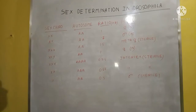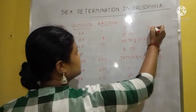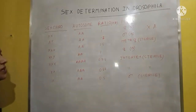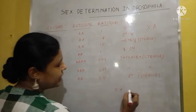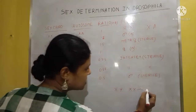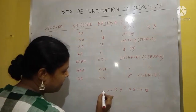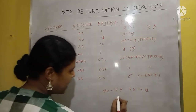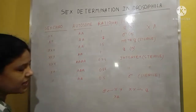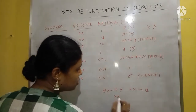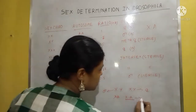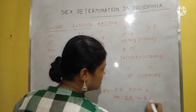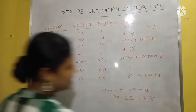First, two genes are very important in Drosophila: the X gene and the A gene. Generally in humans, X and Y are important — XX denotes female and XY denotes male. But in Drosophila, the X and A genes are important because the ratio of X to A determines whether it is female or male Drosophila.